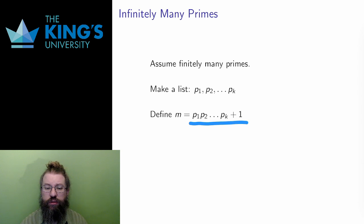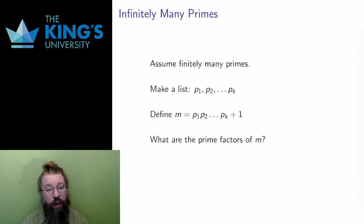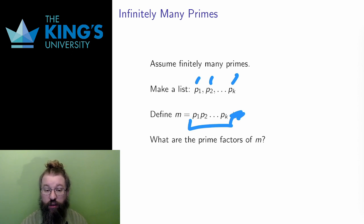Now I ask a question: What are the prime factors of this number? I know that all numbers break down uniquely into prime factors, so it must have prime factors. However, every prime number in my list, which by assumption is all prime numbers, is a factor of m minus 1. A prime number can't be the factor of two consecutive numbers, so none of the prime numbers are in fact a factor of my new number m.